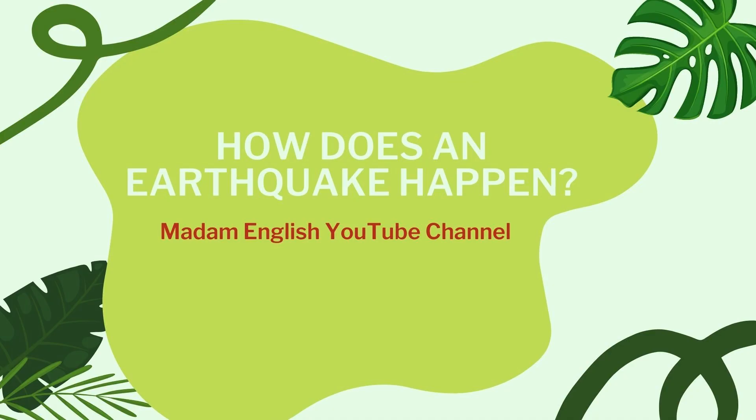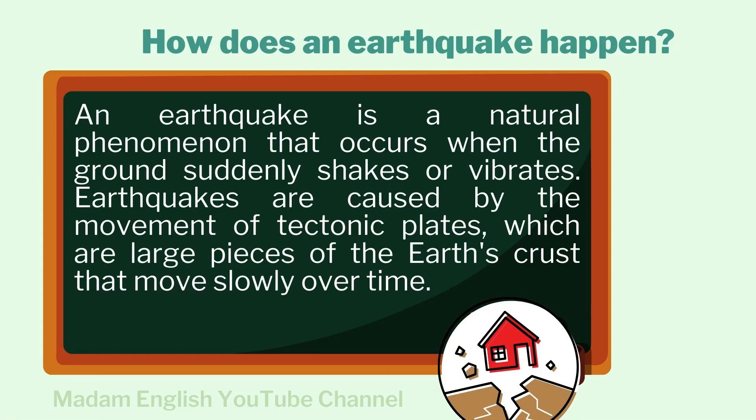How does an earthquake happen? An earthquake is a natural phenomenon that occurs when the ground suddenly shakes or vibrates. Earthquakes are caused by the movement of tectonic plates, which are large pieces of the earth's crust that move slowly over time.